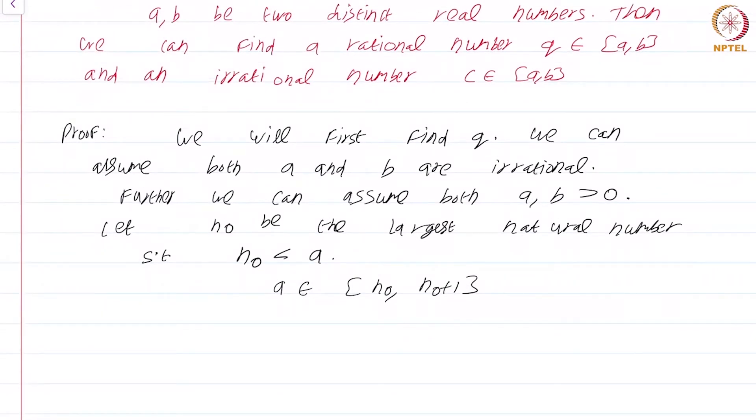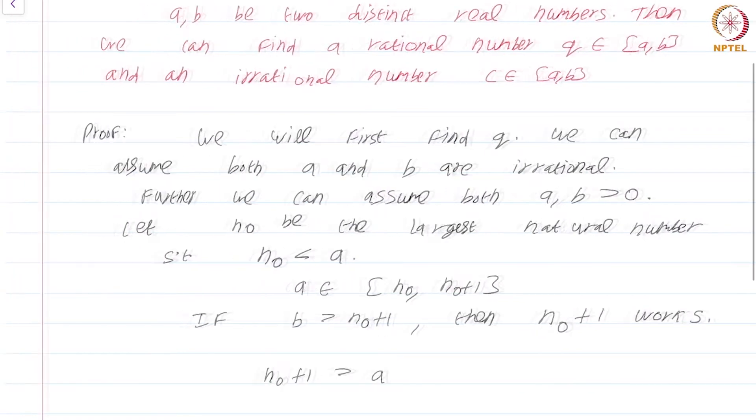In other words, a is an element of the closed interval [n₀, n₀+1]. There are two possibilities. If b is greater than n₀+1, then n₀+1 works because n₀+1 is greater than a (since we assume a is irrational) and it is less than b.